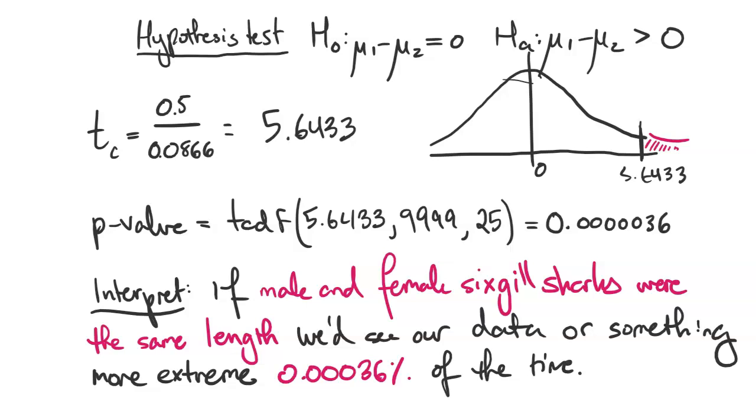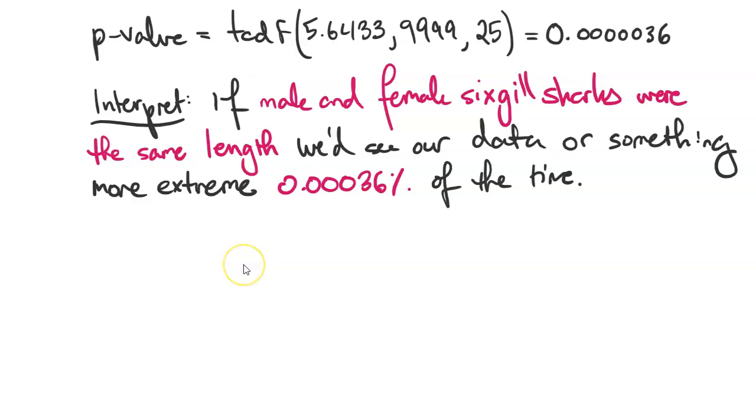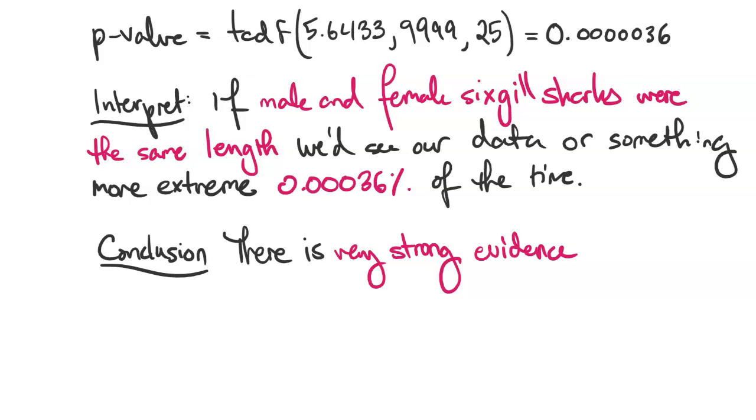Since that number is well below 1%, our conclusion is that there is very strong evidence that male six gill sharks are smaller, which is our alternative hypothesis. Remember, the conclusion is always stated in terms of the alternative.